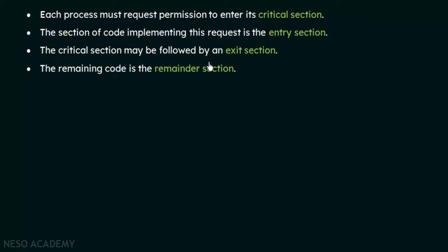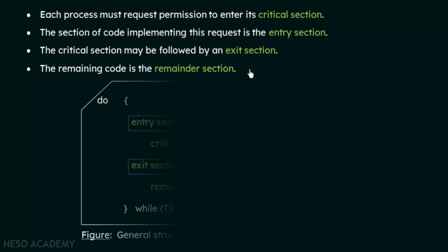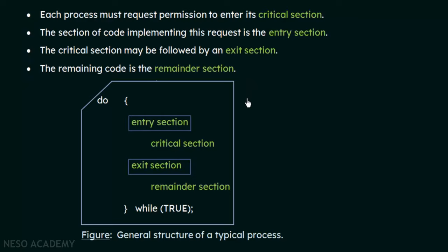The critical section may be followed by an exit section. After the critical section is complete, it will be followed by an exit section. The remaining code is the remainder section. So our code is basically divided into four parts: the entry section, the critical section, the exit section, and the remainder section.